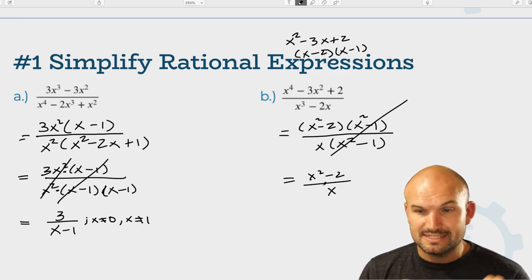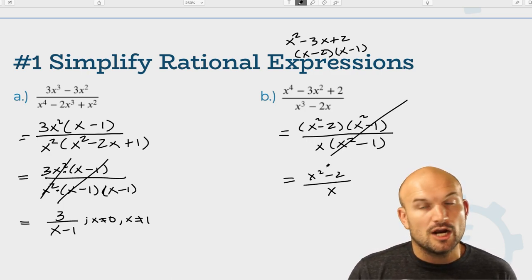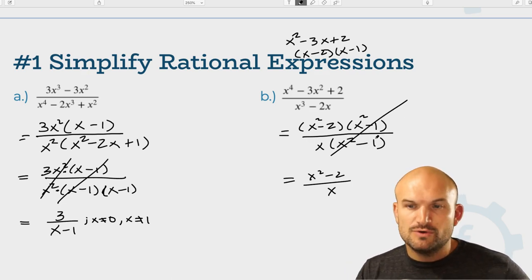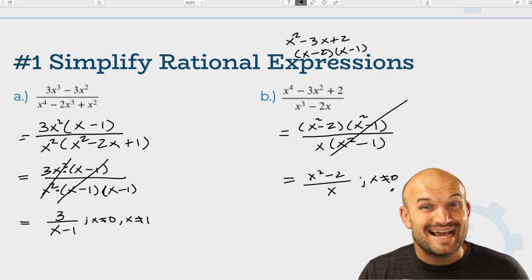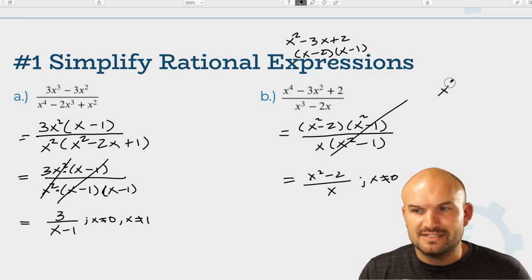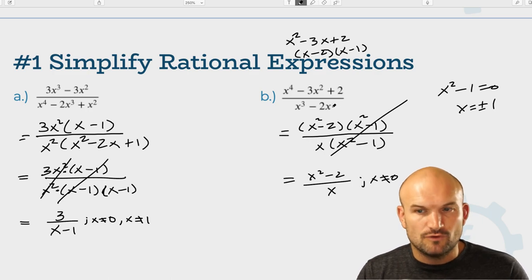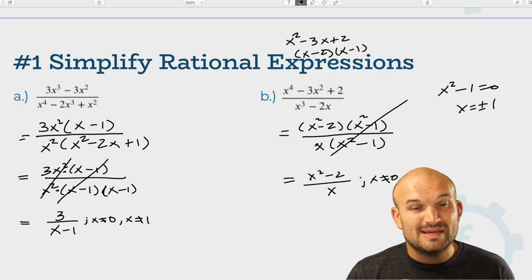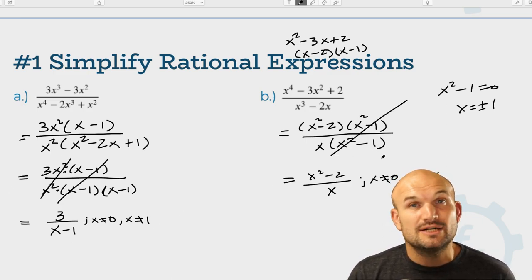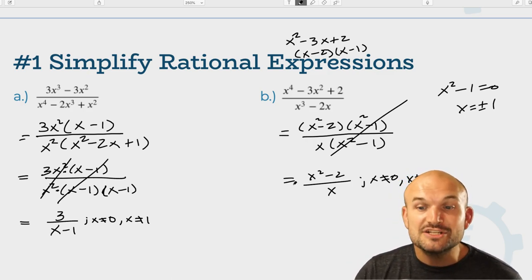The x squared minus 1 got divided out, but that doesn't mean those values are now defined. Whenever you're identifying restricted values, you have to go back to the original equation. When x equals 0, the denominator equals 0, so x cannot equal 0. From x squared minus 1 equals 0, we get x equals plus or minus 1. So x cannot equal plus or minus 1 either. Even though those expressions divided out — just like the previous example — those are still restricted values, which we also refer to as holes in the graph.